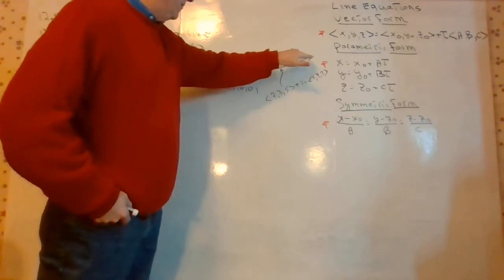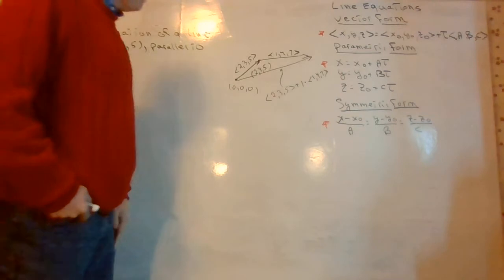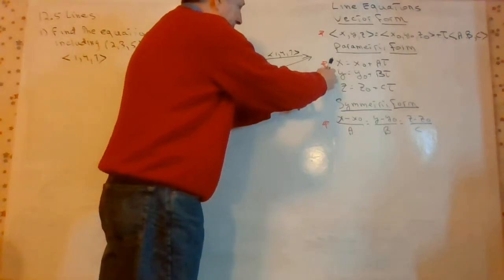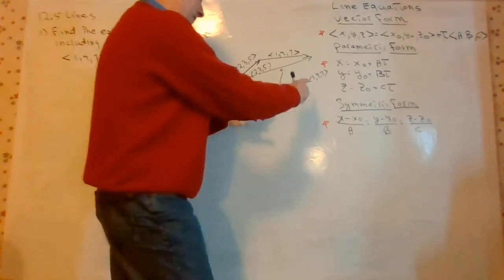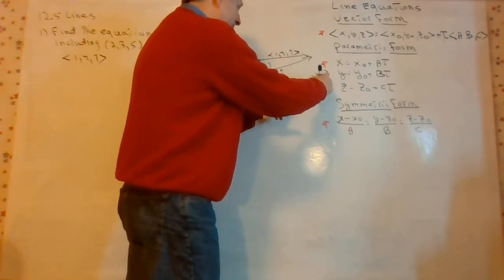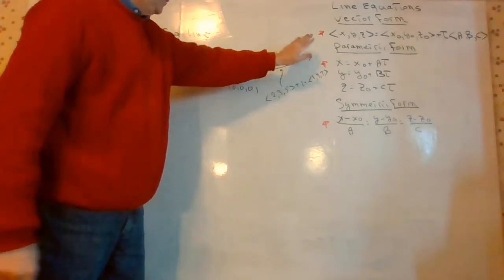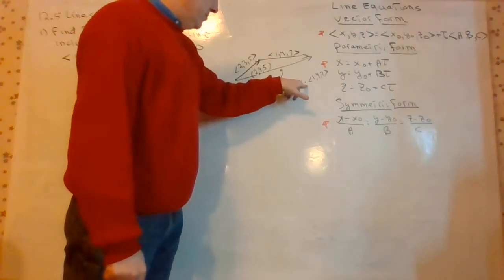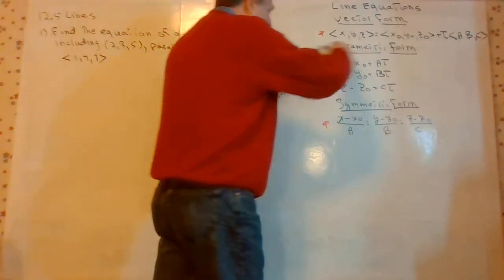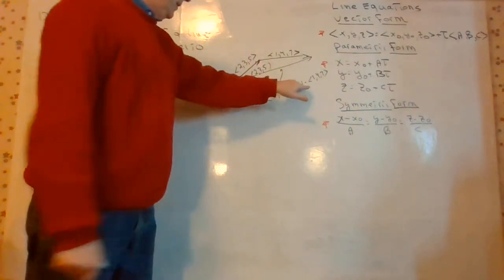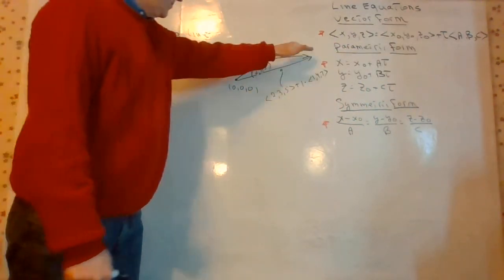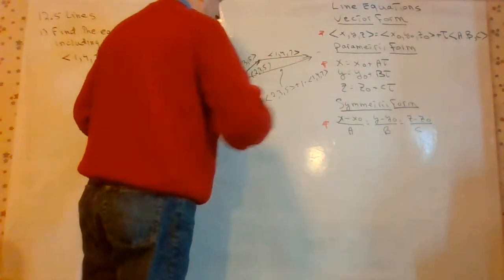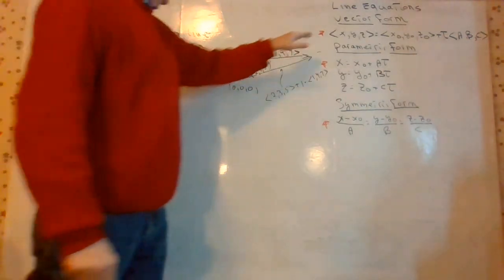If you just add 1, 4, 7 to it, it takes us to this point. The vector sum is 2, 3, 5 plus 1 times 1, 4, 7, which gives us the vector 3, 7, 12. If you increase the scalar to 2, it took 2 of these vectors — it just moves farther out. If you put a negative parameter here, it takes you backwards, and it traces out this line. That's where the vector form comes from.